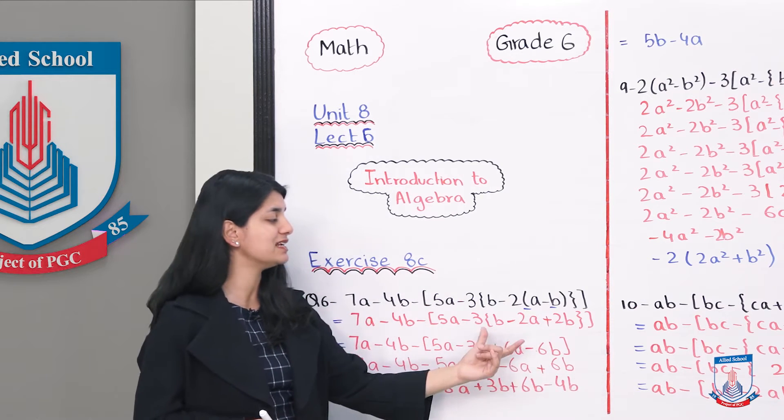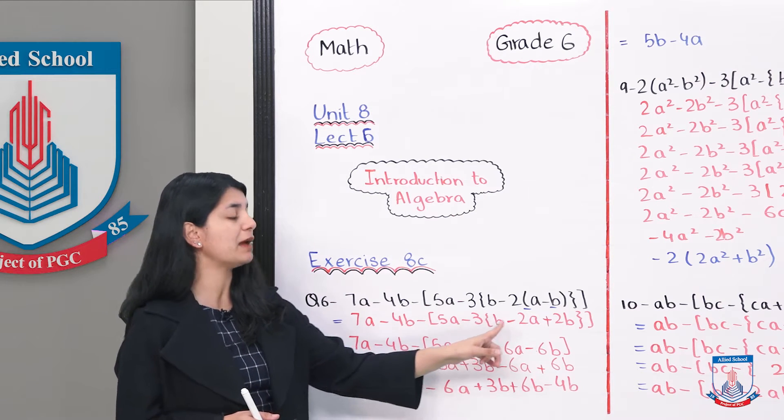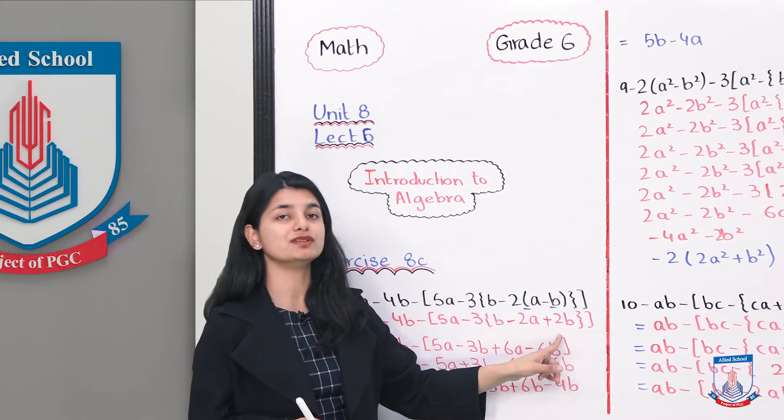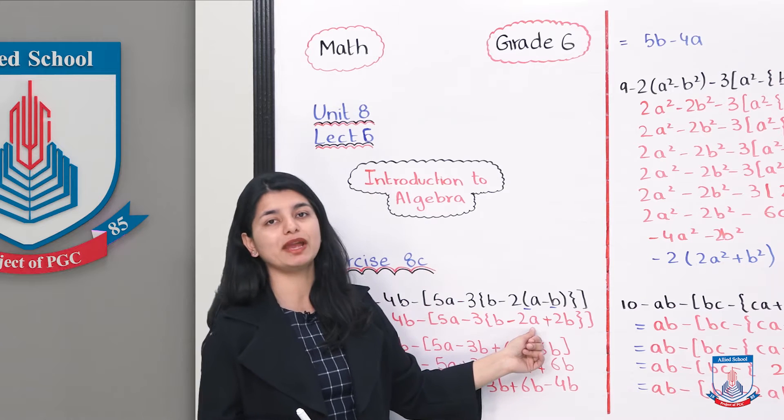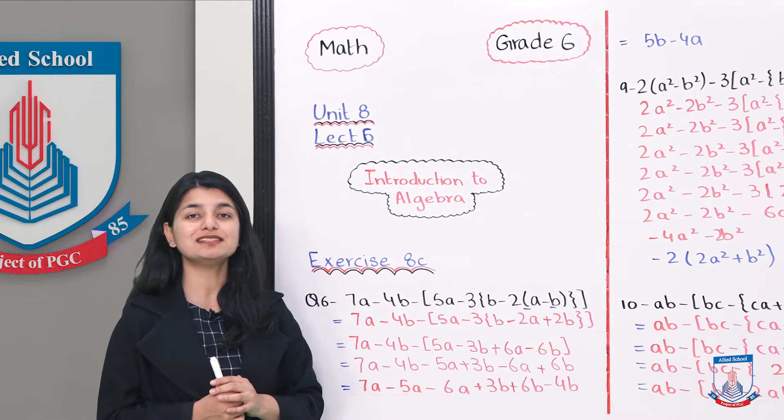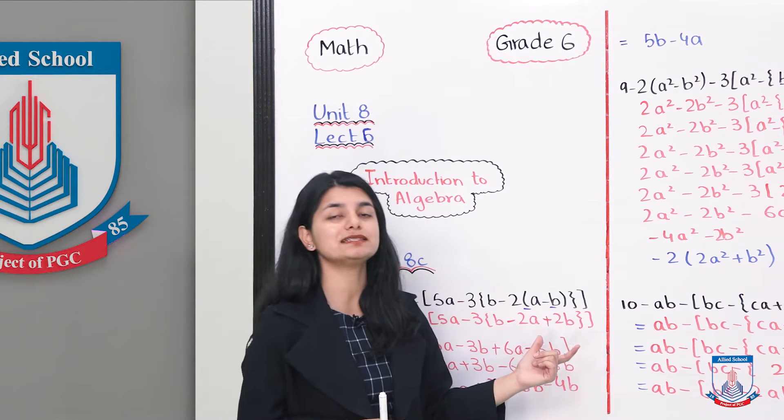So yeh kya hoga? Humne apne parenthesis ko ab open kar liya. Next step humara hoga. Pehle iske andar wali cheezo ko altogether karke likhna. And then we will multiply with what they are outside of.